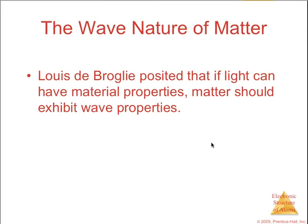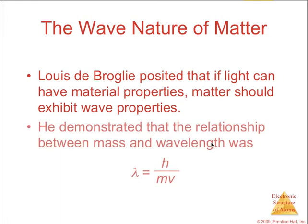Louis de Broglie posited that if light can have material properties, then matter should exhibit wave properties. He demonstrated that the relationship between mass and wavelength was represented by this equation where the wavelength is equal to Planck's constant.